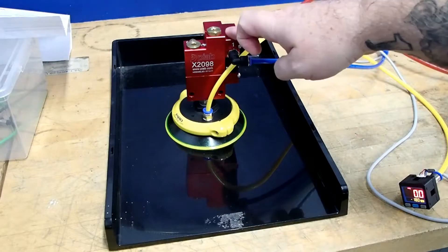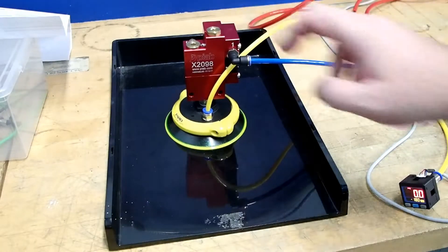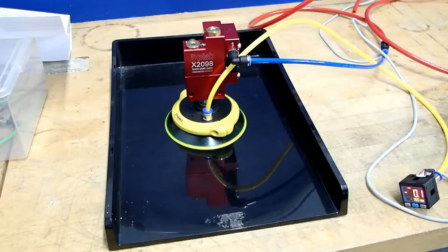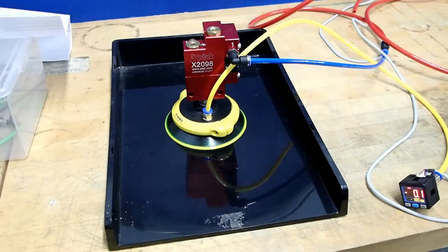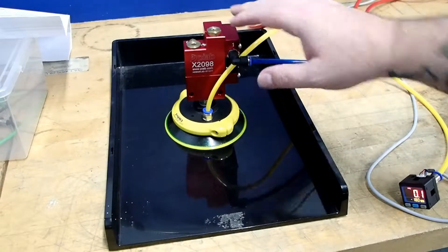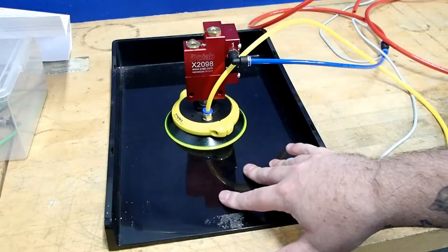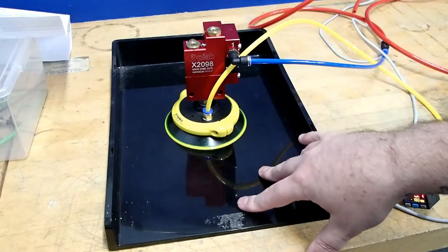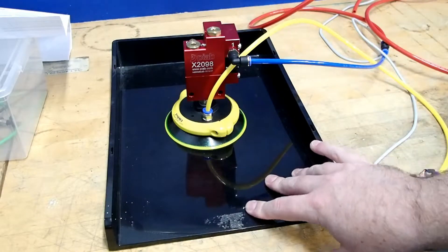Hello, today we're going to be taking a look at the Piab X2098, otherwise known as the VacCheck Valve VT1 VacuStat. This product has a lot of unique features that'll definitely help you in an energy savings environment where you don't want to lose hold on your workpiece in case of a power outage, an air outage, or an emergency stop situation.